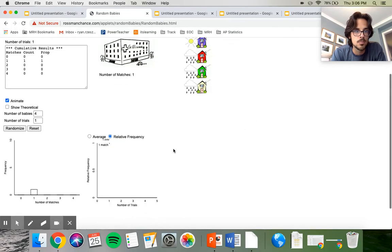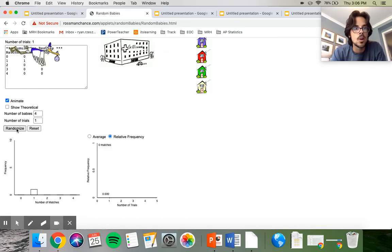I want to show you guys what I'm tracking in my graph over here. This is going to estimate for us what the probability is of getting no matches. We did one trial and we got a match. So right now, after one trial, it thinks the probability of no matches is impossible, which obviously isn't right, but we don't have enough data yet. I'll run another trial and we had one match again.